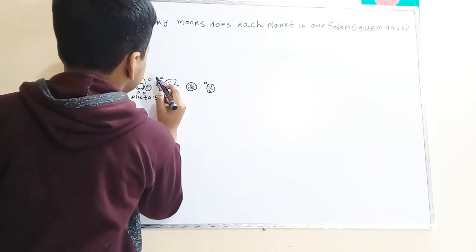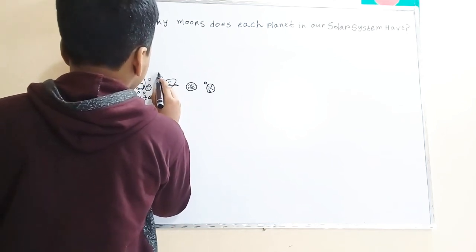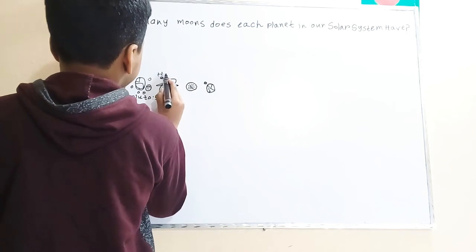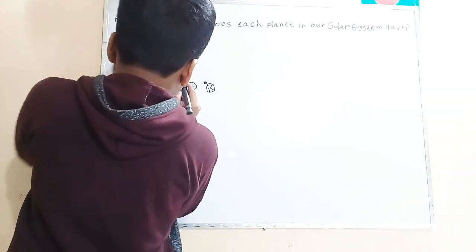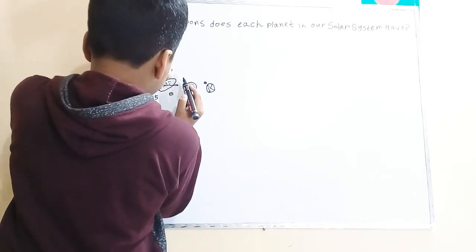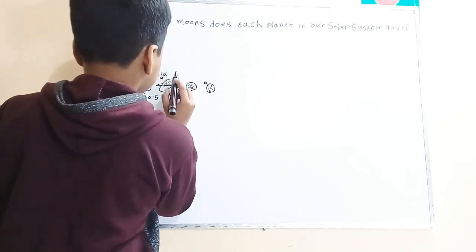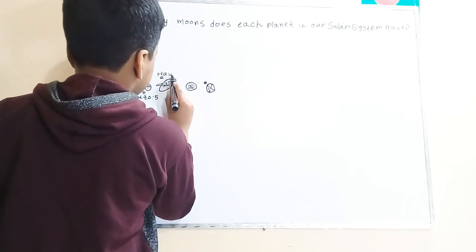And now Haumea. Well, Haumea is so fast spinning, four hours. Its day is four hours. It's so fast, and that's why it has a terrible shape, almost an egg. Now it has two moons.